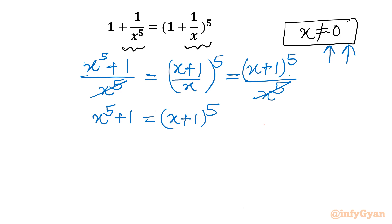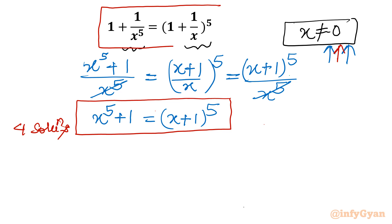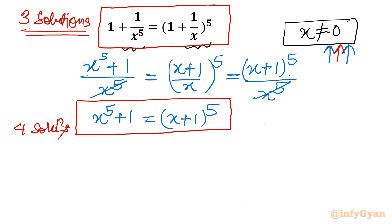Now, how many solutions are there for this equation? Once you expand, x power 5 will cancel from both sides, so the maximum power of the variable x remaining is 4. That gives 4 solutions for this polynomial equation. However, x equal to 0 is also a solution of that polynomial but is excluded by our domain condition. So for the given original equation, there are 3 valid solutions.